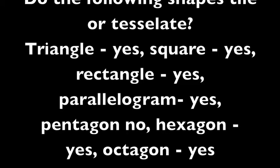Which shapes can tile a surface? Triangle can. Square, yes it can. Rectangle can tile a surface. Parallelogram can tile a surface. Pentagon, yes and no. Hexagon, yes it can. Octagon, no it can't.